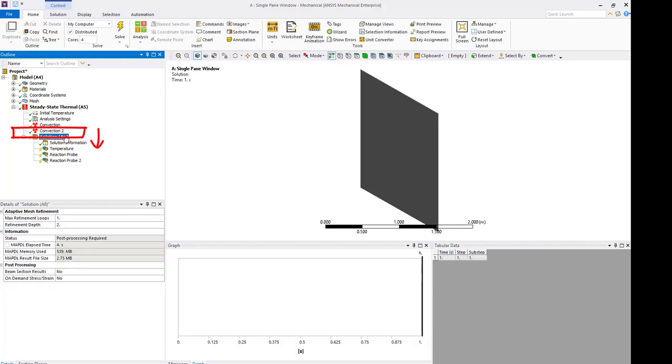Drag and drop convection 2 from steady state thermal branch to the solution to create the second reaction probe. Evaluate the result.